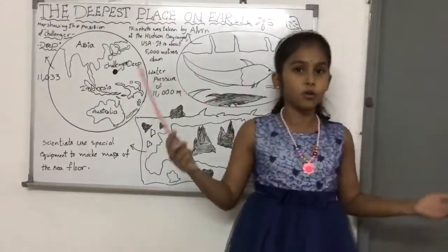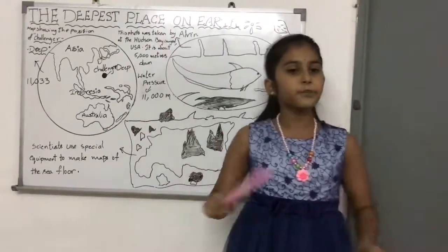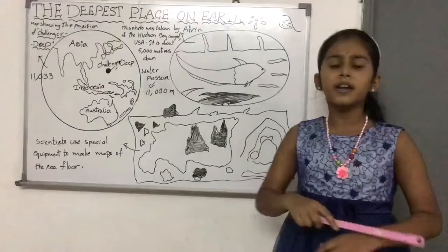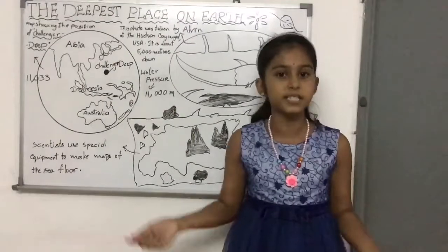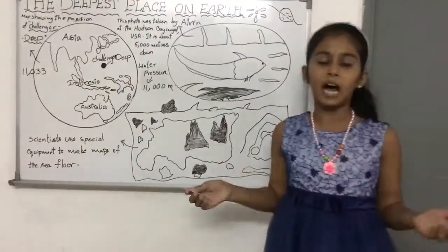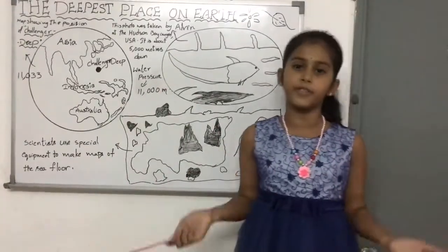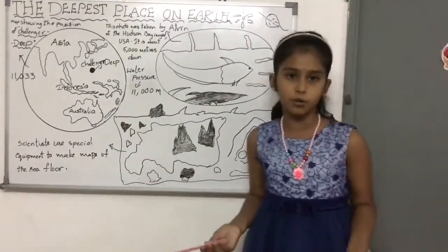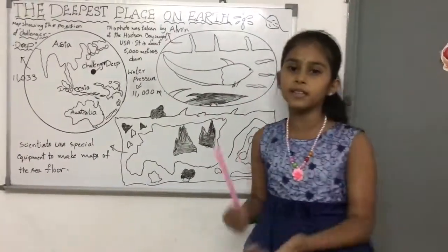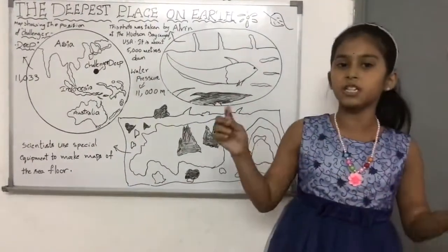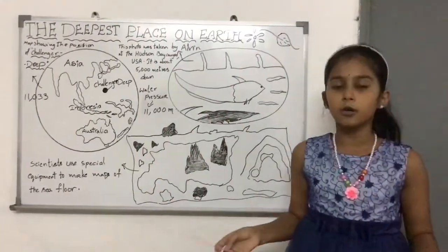Did you also know, before Trieste's search, scientists believed that nothing could live below 1,000 meters below the surface. But after Trieste's research, scientists knew that some animals and plants can live there. And before, they thought the weather, the cold, the dark and also the water's pressure make life impossible to live there.